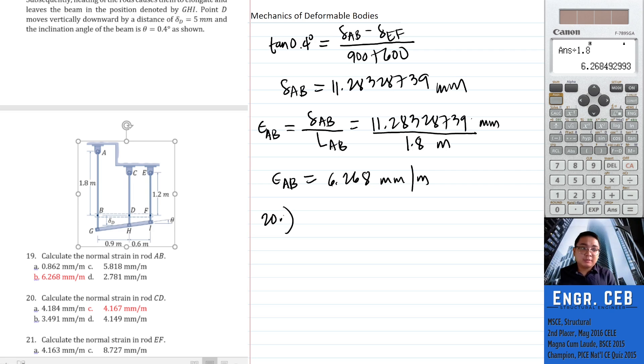Next, calculate the normal strain in rod CD. For rod CD, that is simply the deformation of CD over the length of CD. 5 millimeters is the deformation of CD. Its original length is 1.2 meters. Therefore, the normal strain in segment CD is 4.167 millimeters per meter.